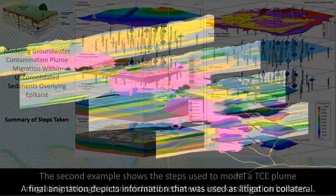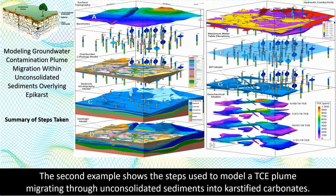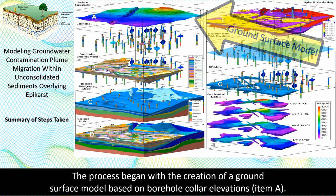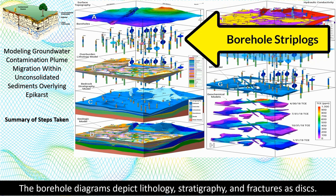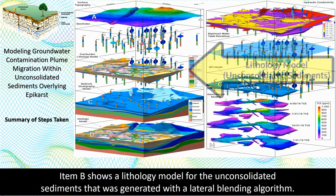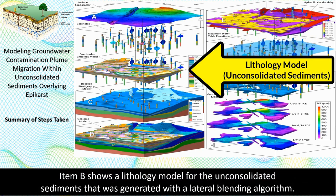The second example shows the steps used to model a TCE plume migrating through unconsolidated sediments into karstified carbonates. The process began with the creation of a ground surface model based on borehole collar elevations. The borehole diagrams depict lithology, stratigraphy, and fractures as discs. Later on, these fractures will be propagated within selected formations. Item B shows a lithology model for the unconsolidated sediments that was generated with a lateral blending algorithm.